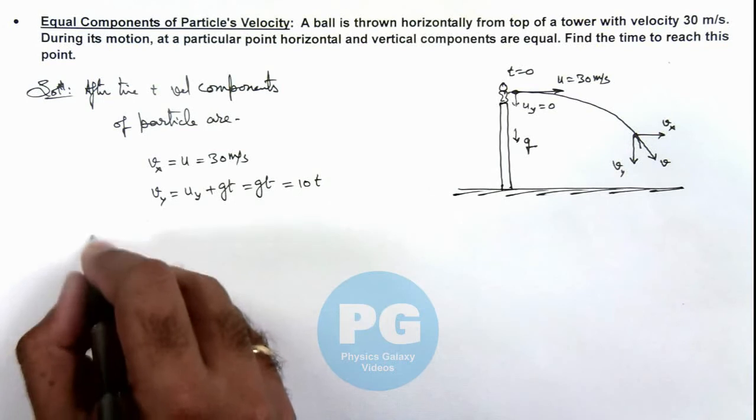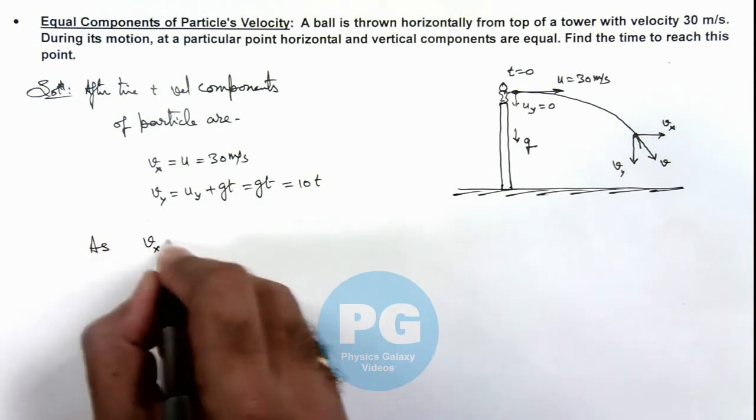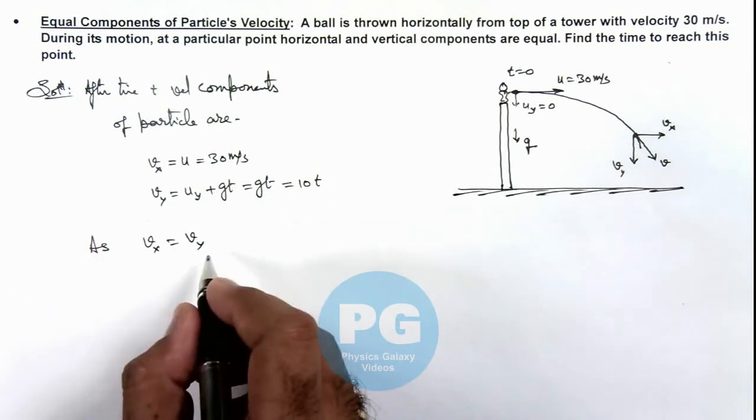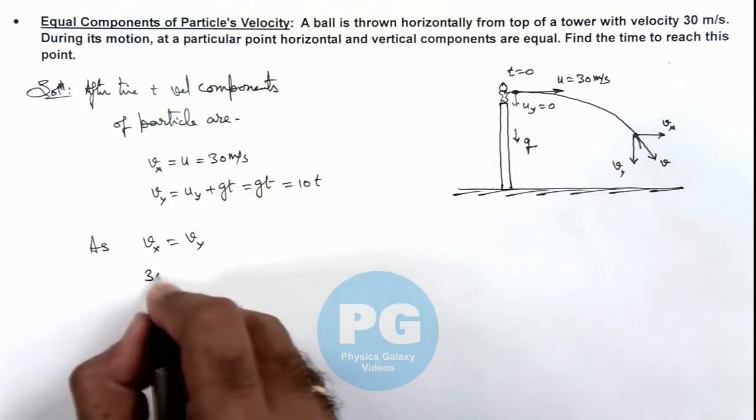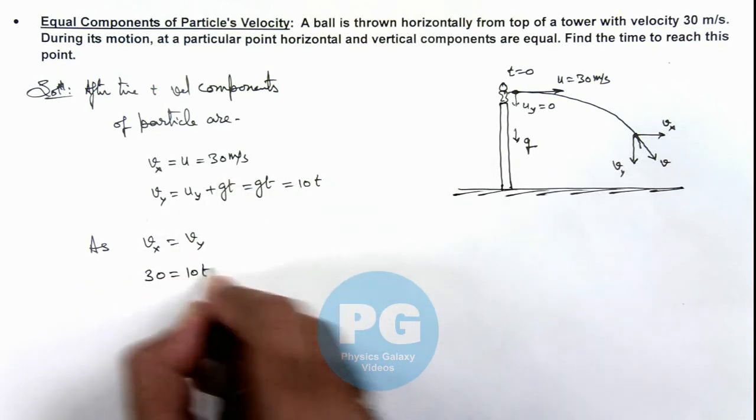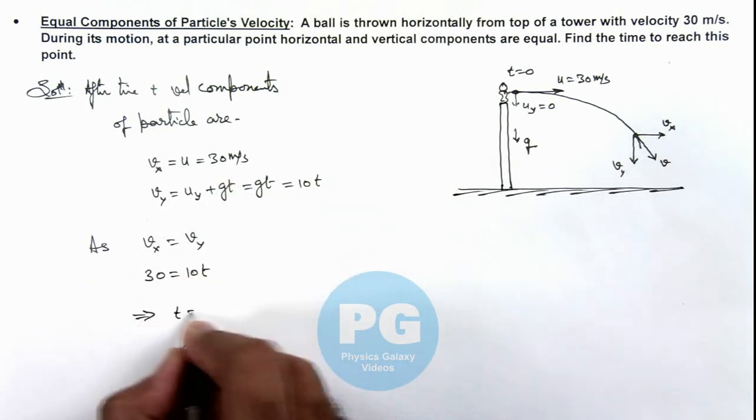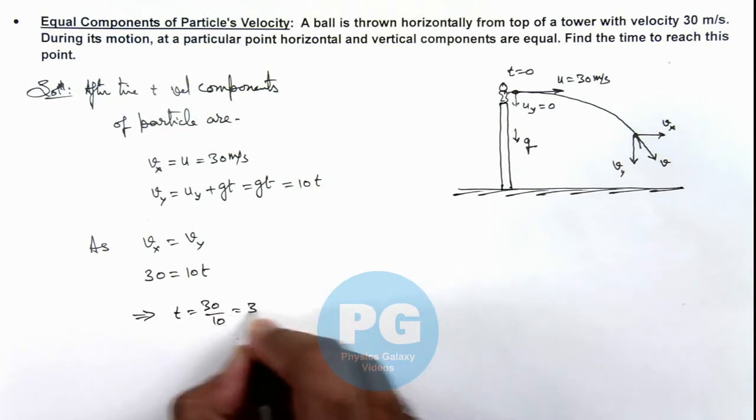And we are given that v_x is equal to v_y, so here we can write v_x is equal to v_y. Here we can write 30 is equal to 10 t, which implies the value of time is 30 by 10, that is 3 seconds.